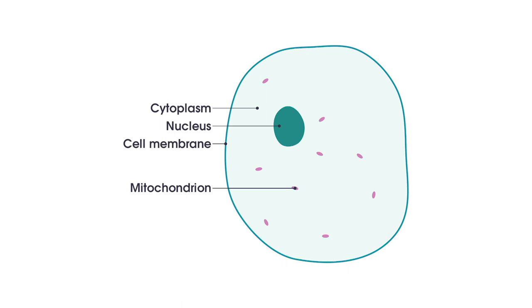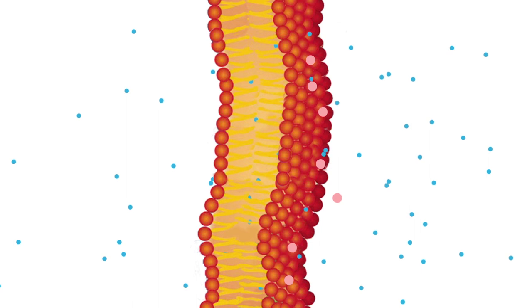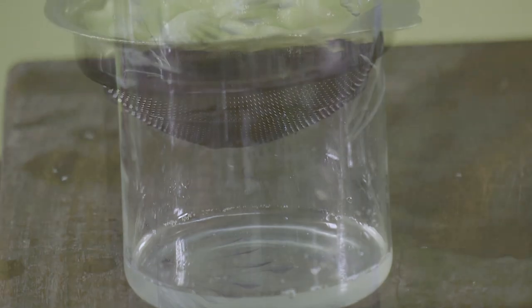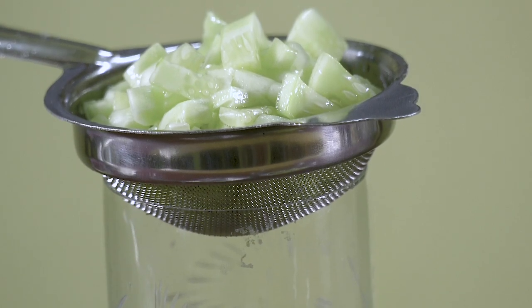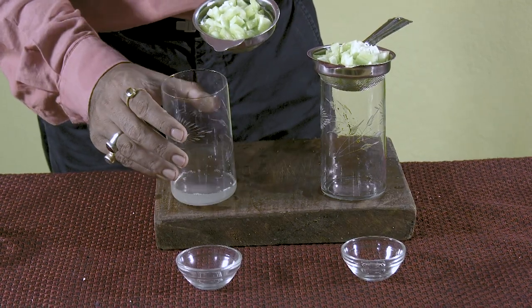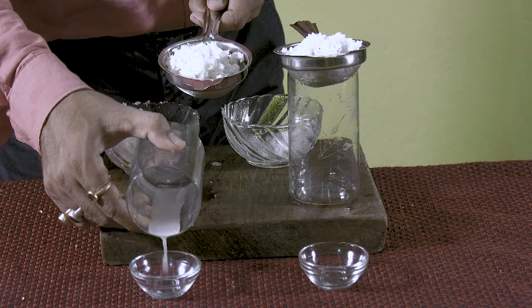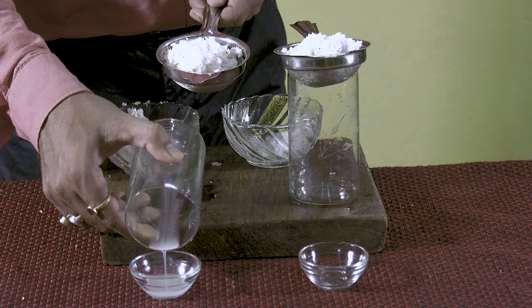Osmosis takes place in all cells. The cell membranes are semi-permeable membranes. So, water from the cells of the cucumber come out when the cells come in contact with the salt. Similarly, water from the cells of coconut come out when the cells come in contact with sugar.